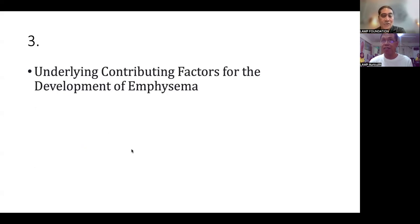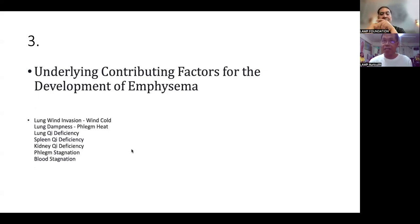Okay, can you tell us the underlying contributing factors for the development of emphysema? Well, we know for a fact that the main contributing factor for emphysema is cigarette smoking. And one also is allergy or repeated childhood respiratory infection. But just like if we have this exterior pathogenic factor that could trigger emphysema, like wind cold invasion, lung dampness, phlegm heat, lung chi deficiency, spleen chi deficiency, phlegm stagnation, and also blood stagnation.